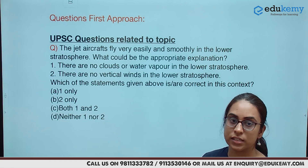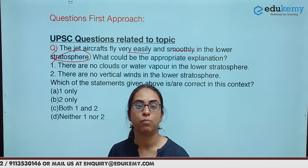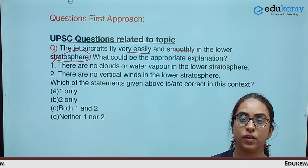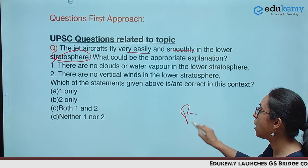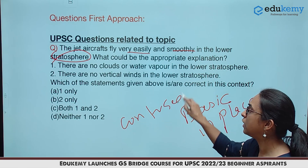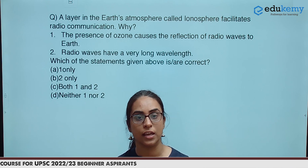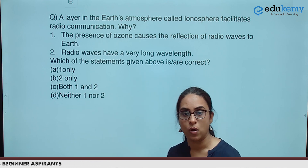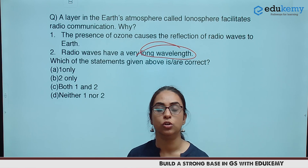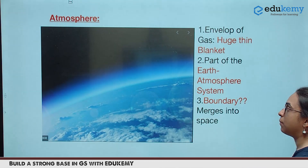A very simple and basic question like: a jet craft flies very easily and smoothly in the lower stratosphere — what could be the possible explanation? The first statement talks about no clouds, no water vapour, no vertical winds in the stratosphere, and then we have to select the correct answer. Unless our basics are in place, a student would get confused. Similarly, another question that has been asked is about the ionosphere which facilitates radio communication, and the reason involves whether it has ozone causing reflection and certain basics about radio waves.